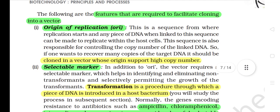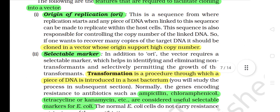The following features are required to facilitate cloning into a vector. 1) Origin of Replication (ORI): This is a sequence from where replication starts, and any piece of DNA when linked to this sequence can be made to replicate within the host cells. This sequence is also responsible for controlling the copy number of the linked DNA. So, if one wants to recover many copies of the target DNA, it should be cloned in a vector whose origin supports a high copy number.